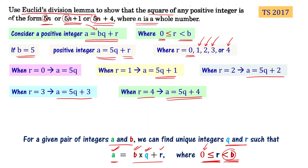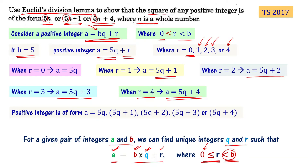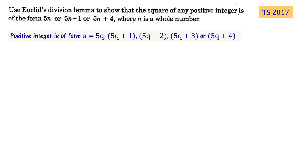So any positive integer a, when b equals 5, will be in the form of either 5q, 5q plus 1, 5q plus 2, 5q plus 3, or 5q plus 4. Now let's talk about the square of the positive integer. Let's start squaring. First, if a equals 5q, then what is its square? a squared equals 5q whole squared.